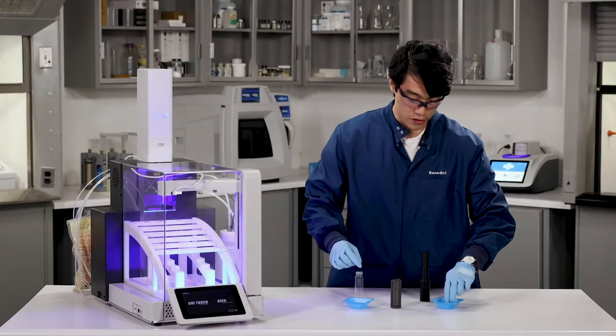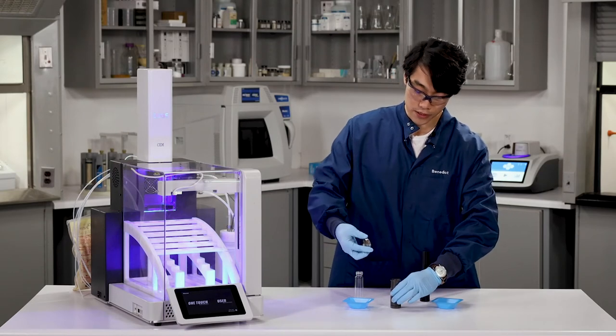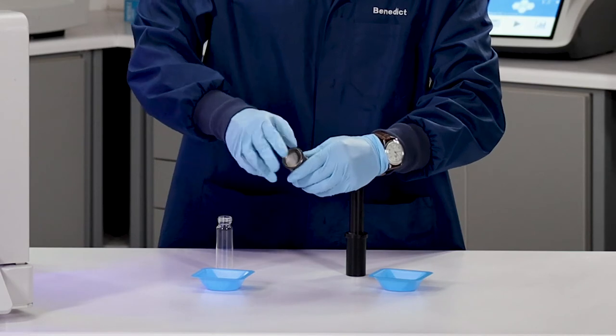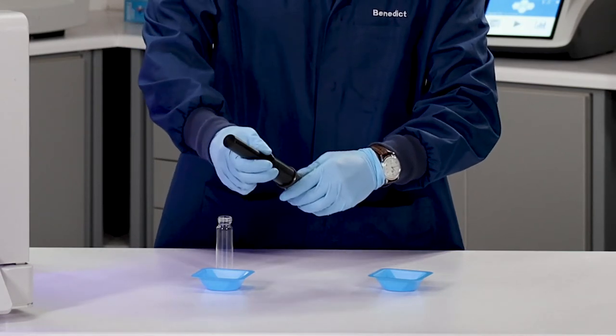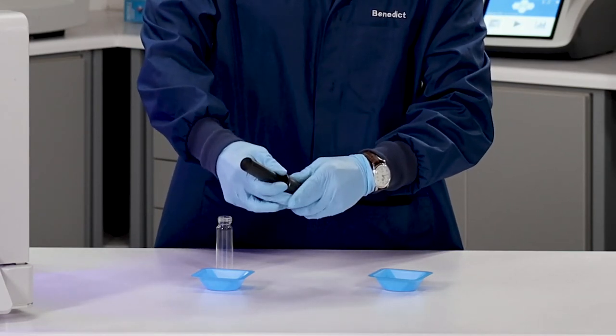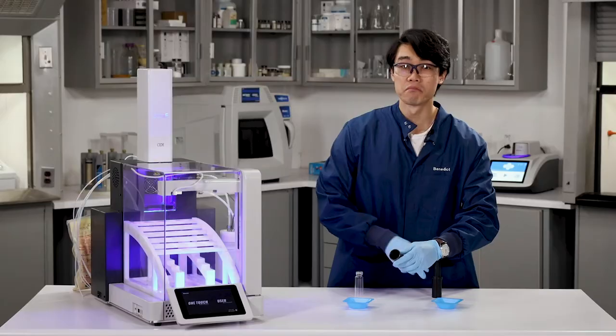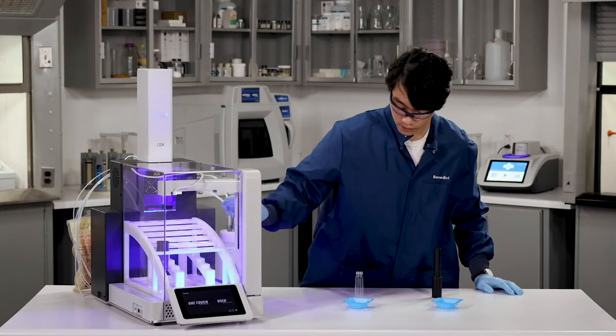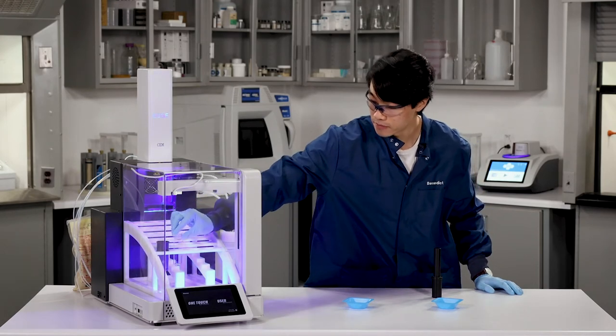And the last thing that I'm going to do is I'm going to take one of our Q-screens in order to keep the sample submerged in the solvents, place it on top, and push it through the opening. And just like that, we're done. I'll go ahead and place the Q-cup into the rack with a vial right beside it.